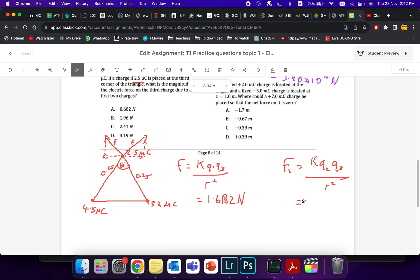F2, you will do the exact same thing. 9 times 10 to the 9 multiplied by Q2, which is 3.2 times 10 to the minus 6 multiplied by 2.5 times 10 to the minus 6. Divided by R squared, 0.25 squared, you'll get something along the lines of 1.156 newtons, right?